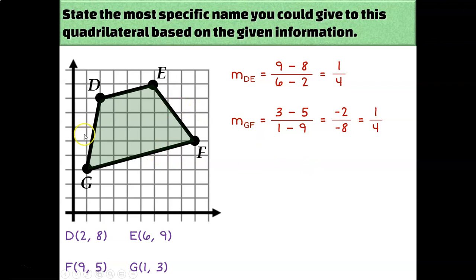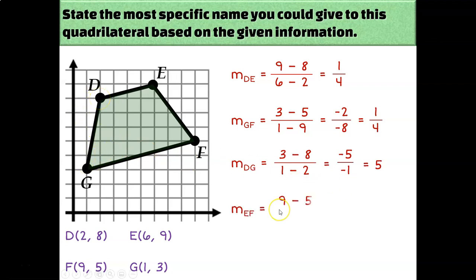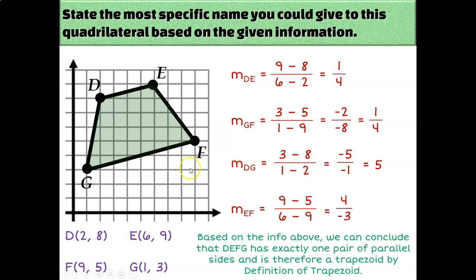Let's prove that the other pair of opposite sides is not parallel. The slope of DG would be 5, because I go up 5 and right 1. And the slope of EF is −4/3, because I go down 4 and right 3. Since those slopes are different, we can definitely conclude this is a trapezoid — it has one pair of opposite sides that are parallel, and one pair that are not parallel.